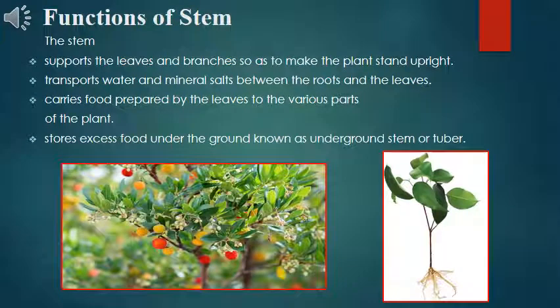The main functions of the stem are: it supports the leaves and branches so as to make the plant stand upright, transports water and mineral salts between the roots and the leaves, and carries food prepared by the leaves to the various parts of the plant. In some plants, a part of the stem stores excess food underground, known as an underground stem or tuber.